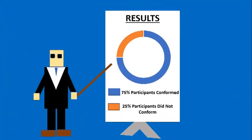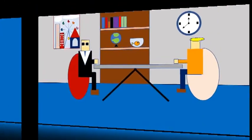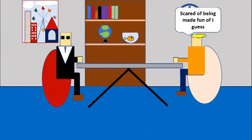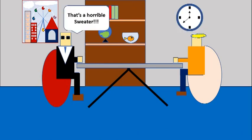According to the findings, 75% of the participants actually conformed. After the experiment, the participants were interviewed and asked why they conformed so readily. The majority stated that they were actually scared of being made fun of, so they sided with the majority.